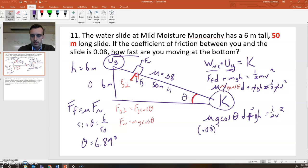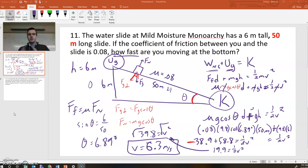So 0.08 times 9.8 times cosine of 6.89, which you can imagine is a pretty tiny number that's going to come out of that, times the distance, which is 50 meters, plus 9.8 times 6, equals one-half V squared. All right, I'm going to clean up some space and do a little algebra magic for you guys here. And after a little bit of algebra magic, we are going to get our answer there. Velocity is 6.3 meters per second.